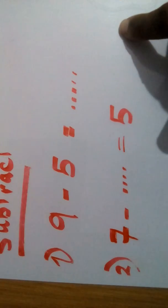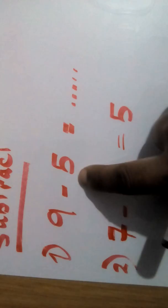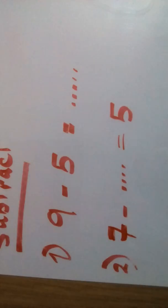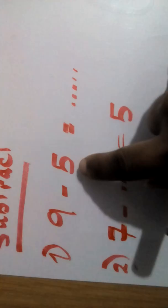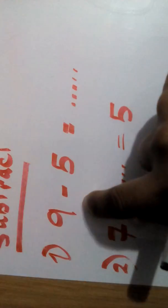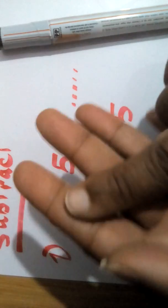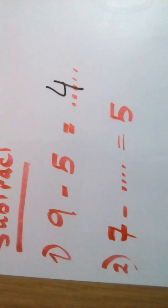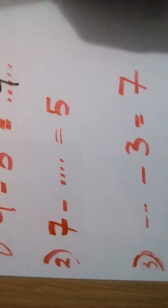Take the first one: 9 minus 5. It's easy. I have 9 and I will take 5 away. Count from the small to reach the big: after 5 — 6, 7, 8, 9 — the answer is 4.